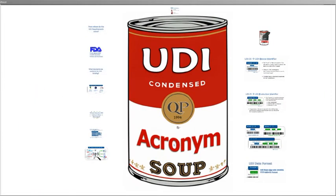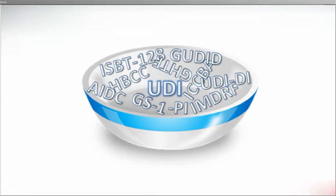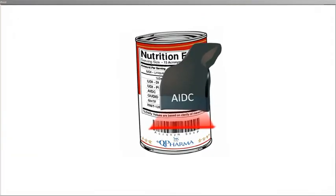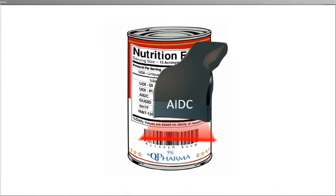UDI, or Unique Device Identification, has so many acronyms it's almost its own brand of alphabet soup. At Q Pharma, we wanted to decode some of these acronyms for you. After UDI, the next spoonful of alphabet soup we would like to demystify is AIDC, or Automatic Identification Data Capture.